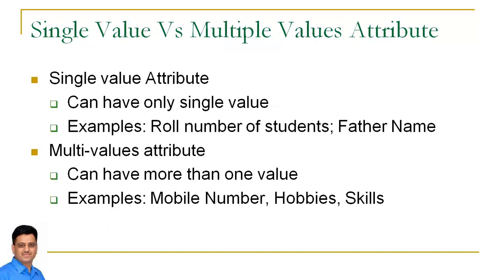Another category is single value and multi-value attributes. Agar ek attribute sirf single value hi retain kar sakta hai, tab hum us attribute ko single value attribute bolte hai. For example, student ka ek hi roll number ho sakta hai, student ka ek hi father name hoga. Toh yeh sare single value attributes hain.